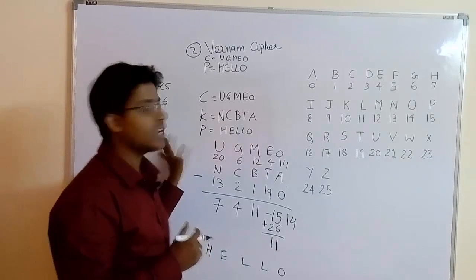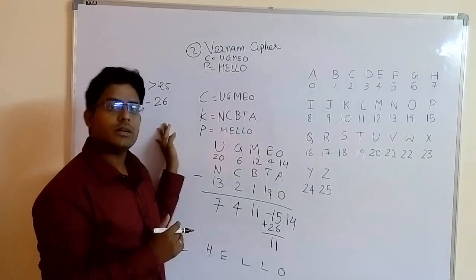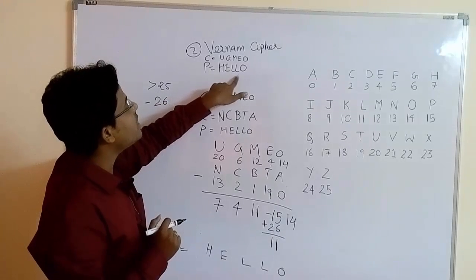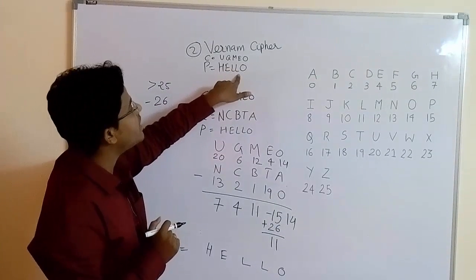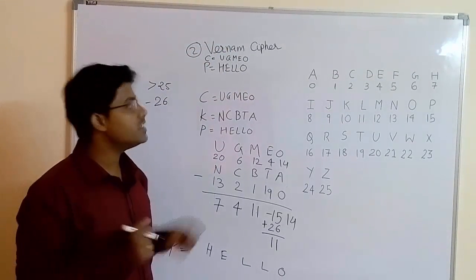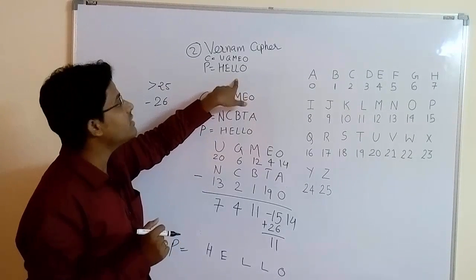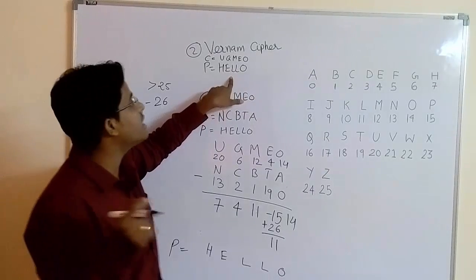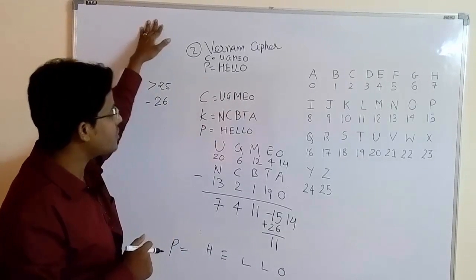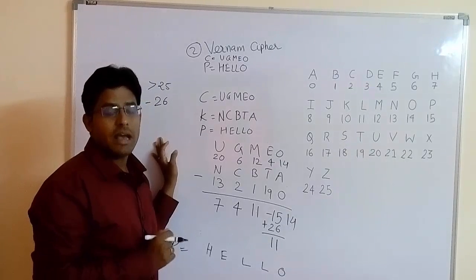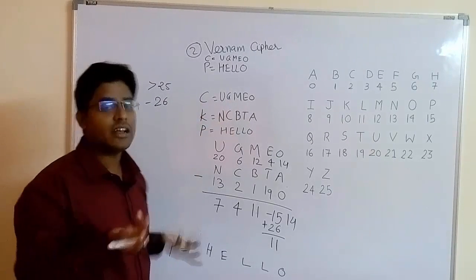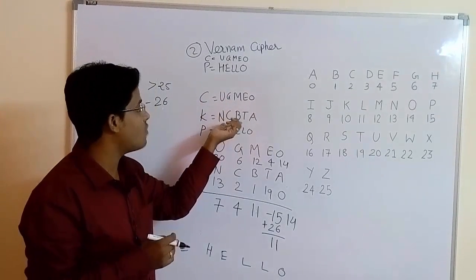This is all about Vernam cipher — encryption and decryption. This method is a little bit more secure than Caesar cipher because even if the plaintext has repeated letters like L and L, the ciphertext does not have repeated letters. In Caesar cipher, the same letter always maps to the same ciphertext letter. The Vernam cipher is known to be one of the best and unbreakable methods, because the key is random, making it very difficult to determine.